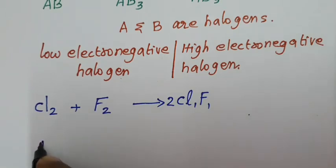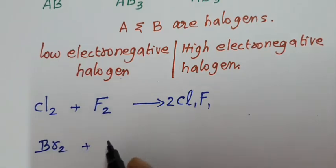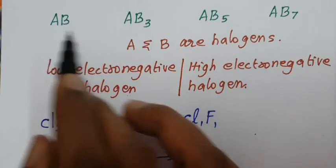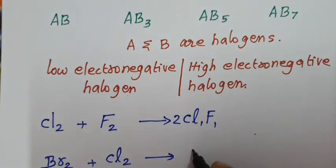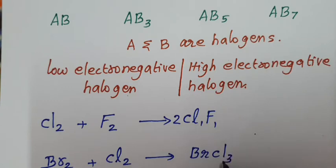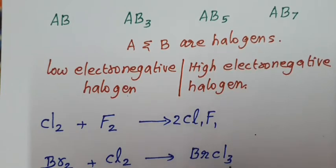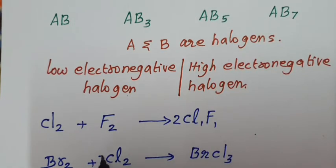If your halogen is Br2, the next halogen may be chlorine or fluorine. For example, taking chlorine and the AB3 molecular formula, you can write BrCl3 — 2 chlorine and 2 bromine gives an even number, so chlorine should be written before bromine: BrCl3.